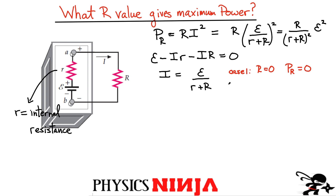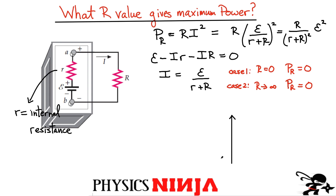What if R tends toward infinity? Now the dominant term in the denominator is R squared. The expression behaves like R / R² = 1/R, which goes to zero as R tends to infinity. So the power is again zero in this limit. That means there must be some value between zero and infinity where we get a maximum power.